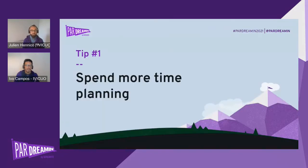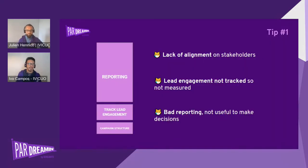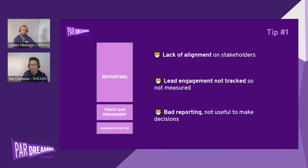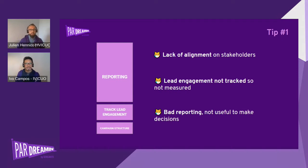Let's start with tip number one: spend more time on planning. A lot of times when we start a project with different customers, we see that teams have spent a lot of time on reporting — building very nice graphs, creating really nice reports, putting metrics in the Salesforce dashboard — but they don't take enough time on campaign structure, defining things, and talking to stakeholders about what they want to measure and how.